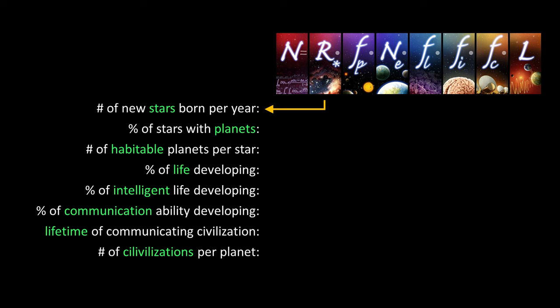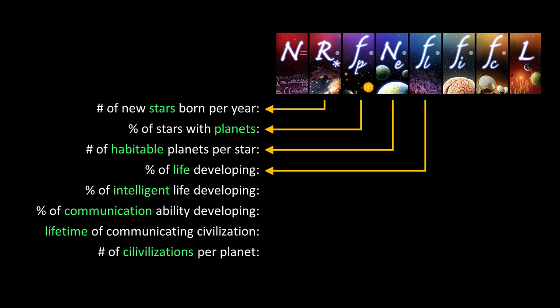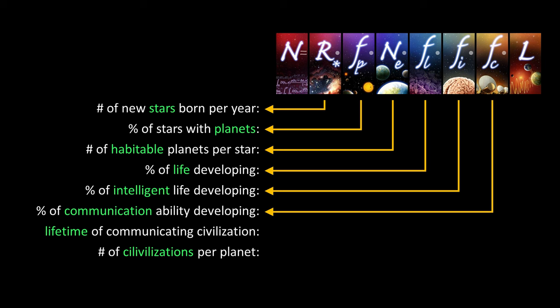The parameters are: the number of new stars born per year, the percent of those stars that have planets, the number of habitable planets per star, the chance of life developing on one of those planets, then the chance of intelligent life developing, and finally the chance of that intelligent civilization advancing far enough to develop the technology to communicate — in our case through electromagnetic signal. Seventh is the lifetime of that civilization while it's in the communicating stage. And eighth, not in the original Drake equation, is the average number of times a civilization is born on a planet — born, goes extinct, and is reborn. This parameter makes sense since the age of a planet can be billions of years. Then you multiply it all together to get the estimated answer.